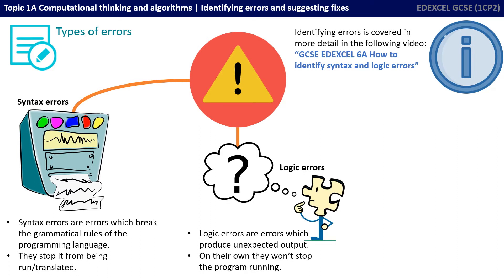The second category of error is logic errors. Logic errors are errors which produce an unexpected output. On their own they won't stop a program from running, so if your program is free from all syntax errors your program can actually run, but it may behave in an odd or unexpected manner because you've made some mistake in the logic of your programming. This makes logic errors sometimes harder to spot than syntax errors.